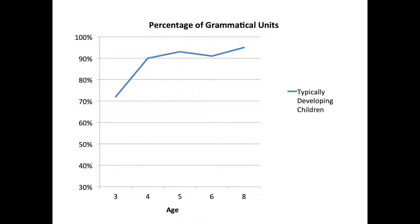But if I tell you that this child is two years old, you might think that is awesome — eighty percent of the sentences are grammatical. So this percentage of grammatically correct utterances is increasing with time. We start with research that shows that at age three, typically developing children on average are seventy percent grammatical.